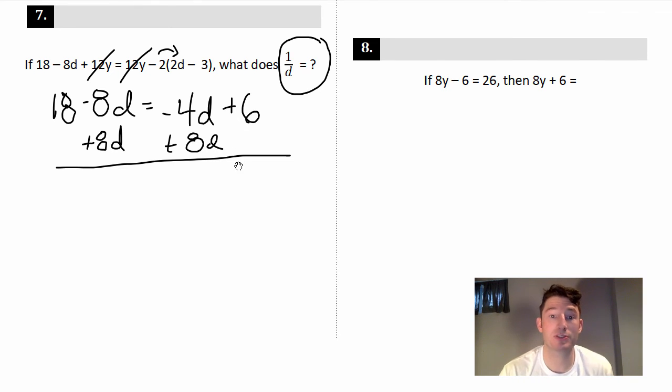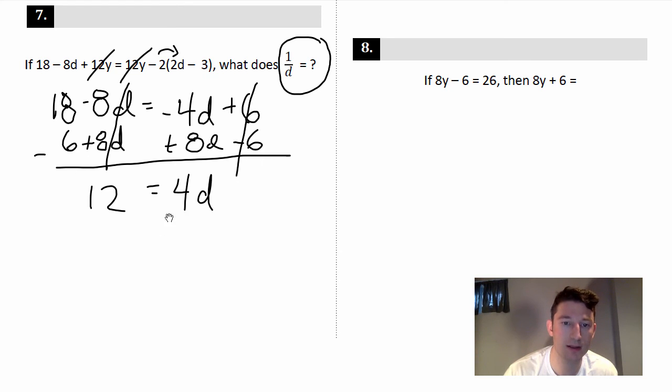All right, so now let's do this. Let's add the 8d, add the 8d. And then I'm going to get the numbers on the other side, so I'll minus the 6, minus the 6. So that's going to cancel out, and we get negative 4 + 8 is 4, so 4d. That will cancel out. 18 - 6 is 12. All right, not bad. We'll divide by 4, divide by 4.